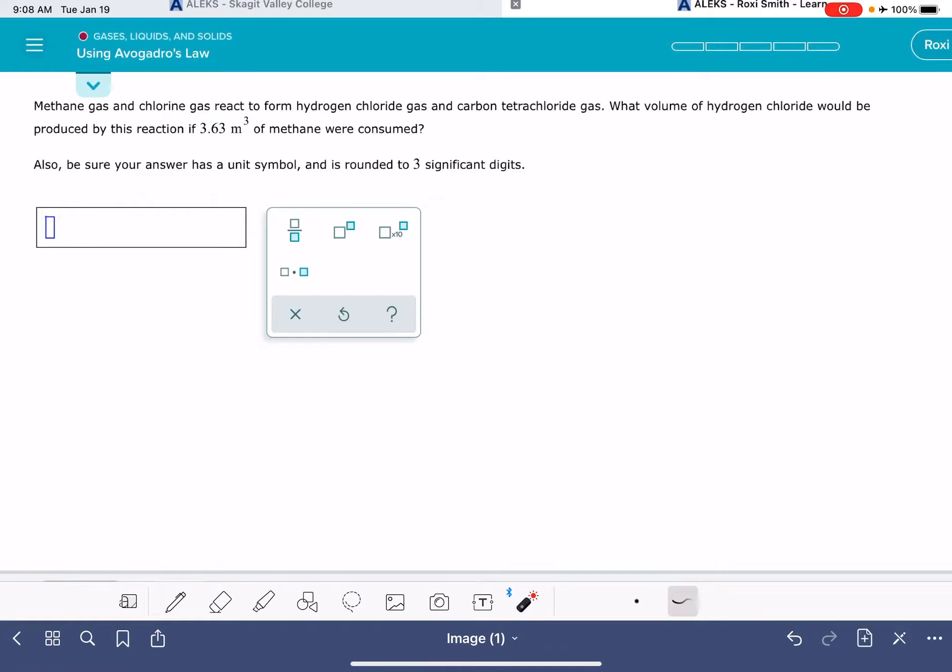In this video, I'm going to show you how to solve an ALEKS problem using Avogadro's law. Avogadro's law says that the initial number of moles of a gas divided by the initial volume of the gas is going to be equal to the final moles divided by the final volume, assuming that the pressure and the temperature of the gas remain constant. So Avogadro's law applies to a gas that's either changing the number of moles or changing in volume or both.